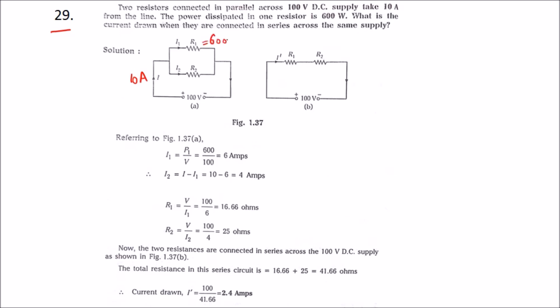If the power dissipated in R1 resistor is 600 watts, we can find I1. How? Because we know P1 is equal to V into I1. So we can write I1 is equal to P1 by V. We know power is 600 and voltage is 100.